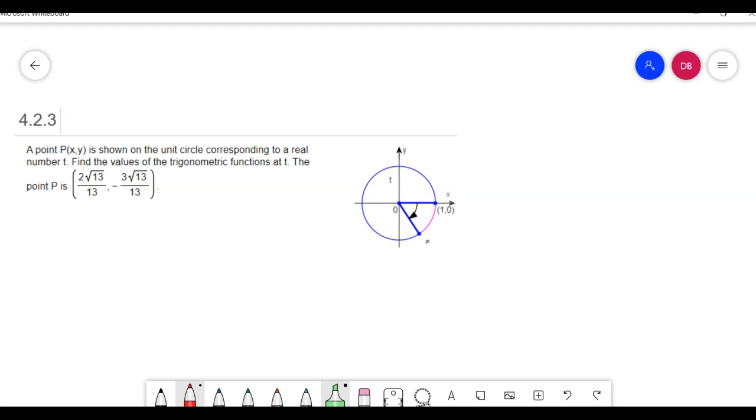Let's start off with just the definition of sine, cosine, tangent. Remember, x, y is the point coordinates. Cosine is the x coordinate, sine is y. The sine of t—they're calling this angle t here—that's the angle all the way around. So the sine of t is the y coordinate, so that's negative 3 square root of 13 over 13.